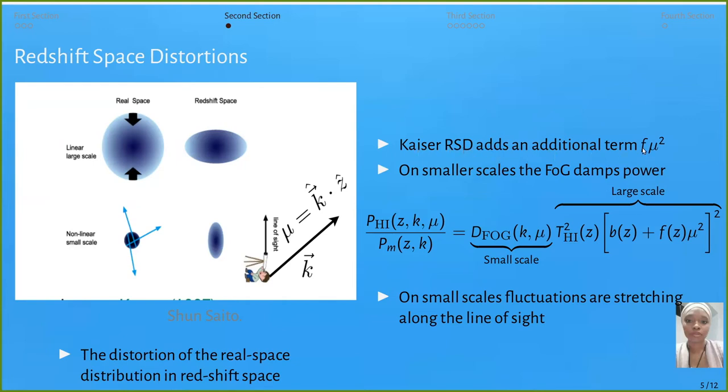On nonlinear scales, the fluctuations generate elongated structures along the line of sight, the Kaiser RSD effect. It adds information of growth rate structure given by this model. In nonlinear scales, we have an additional term, the Finger of God effect. This mu is the cosine angle given by the redshift direction and Fourier mode direction.